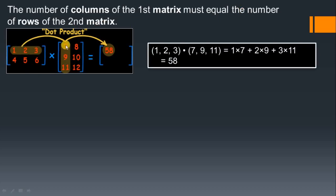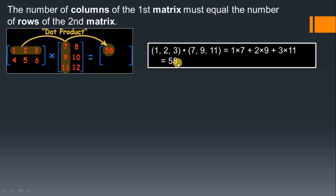In this multiplication process, the first row will be multiplied with the first column, then the first row will be multiplied with the second column. You can observe here: 1×7 + 2×9 + 3×11, which equals 58. You can verify the calculation manually. So the first row is multiplied with the contents of the first column: 1×7 + 2×9 + 3×11.